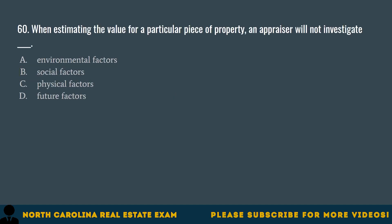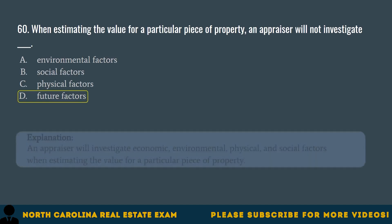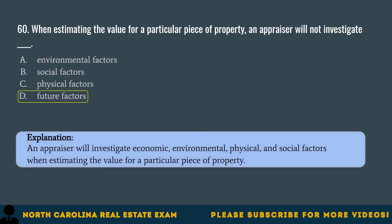Question 60. When estimating the value for a particular piece of property, an appraiser will not investigate A. Environmental factors. B. Social factors. C. Physical factors. D. Future factors. The correct answer is D. Future factors. An appraiser will investigate economic, environmental, physical, and social factors when estimating the value for a particular piece of property.